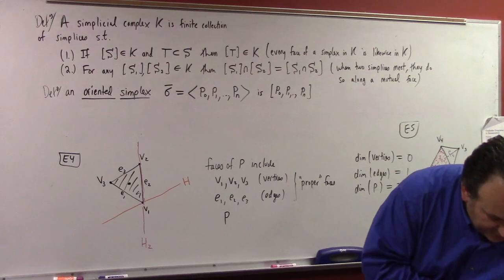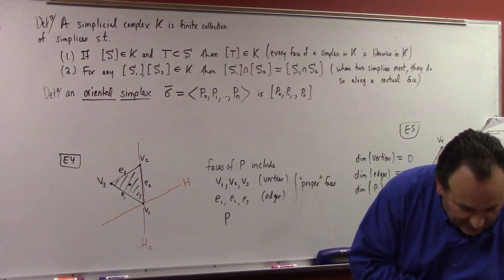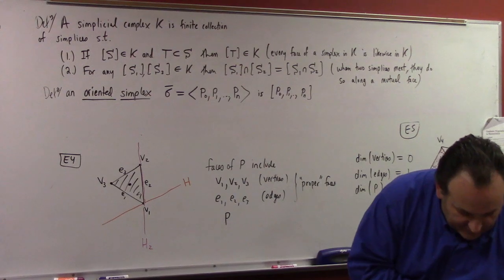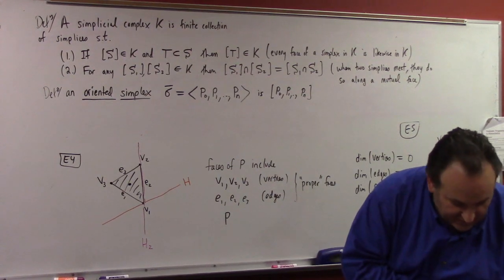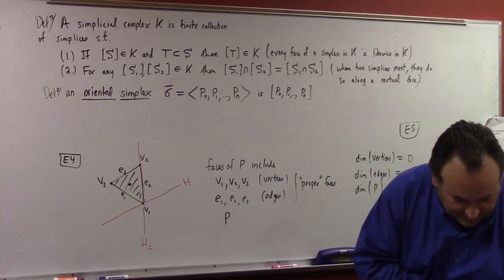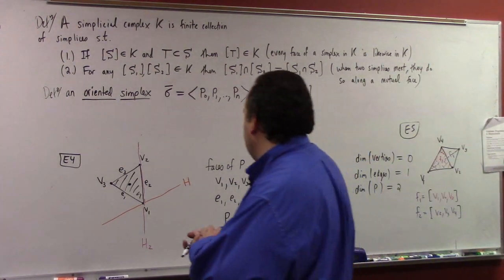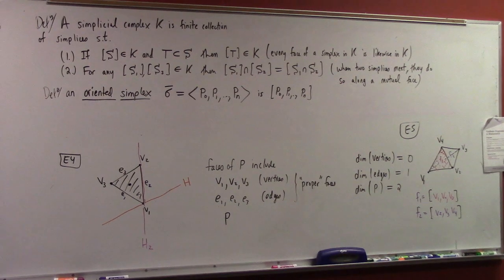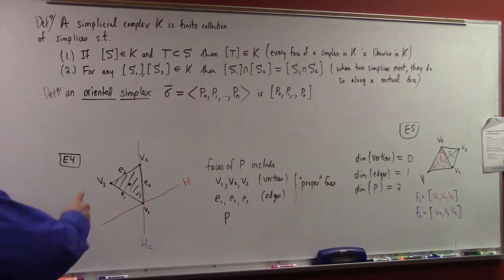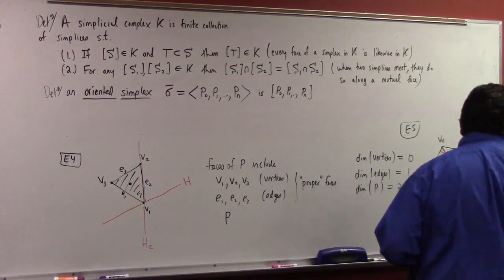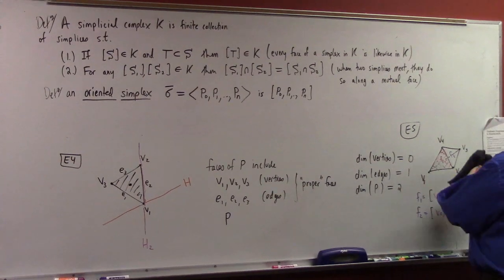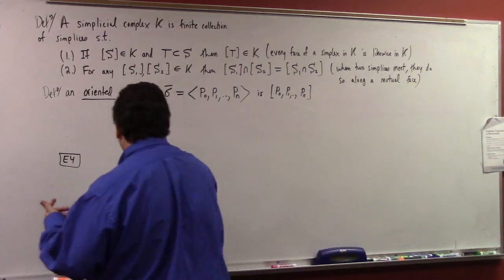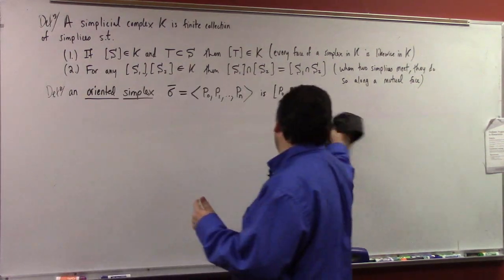All simplices are divided into precisely two equivalence classes, or orientations, depending on whether one chooses an odd permutation or an even permutation of the vertices P0 through Pn. Let's talk about this oriented simplex business a little bit more.